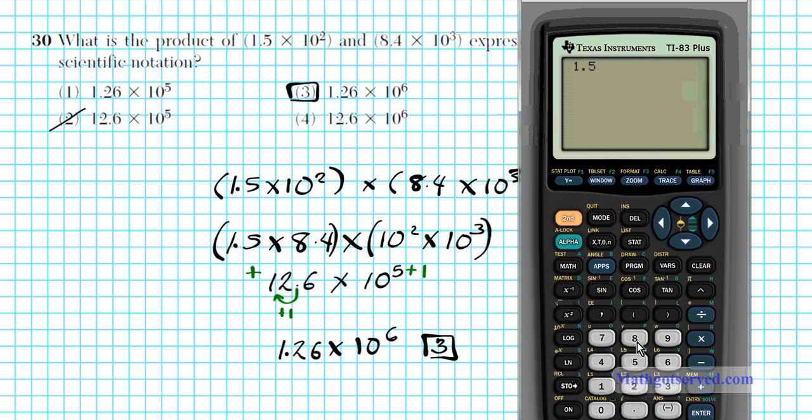You're going to enter it 1.5 times 10 to the second power. This is not a standard language. I'm just writing it like this because it works also. 8.4 times 10 to the third power, and then enter. And the answer is 1.26 times 10 to the sixth. So this 'e' basically means times 10 to the. So we can quite easily see that the answer is 1.26 times 10 to the sixth power. Option number three. You can definitely use your calculator to do this problem.